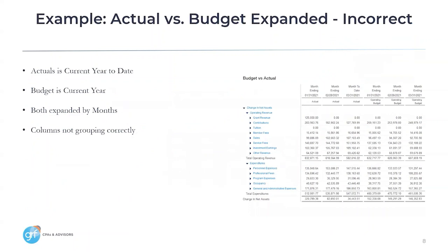The next example we are going to take a look at is an actual versus budget report expanded, but in the incorrect way. We see that the budget versus actual report is expanded by month on both the actual and budget columns. The problem is they're not side by side — we'd expect to see month ending 1/31 of actuals and operating budget side by side. What is causing this is that the actuals column is on a time period of current year to date, while the budget is current year. So even though both are expanded by month, the columns are not grouping correctly.